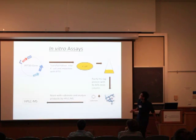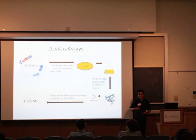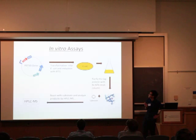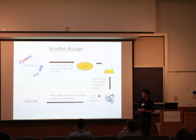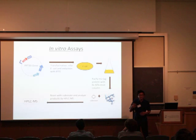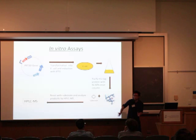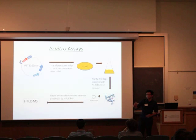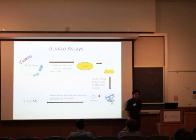For in vitro assays, we purify the proteins by cloning them into pET-30 vectors via LIC, transforming into BL21 expression cells, growing those up, and purifying the protein using nickel-NTA affinity chromatography. A histidine tag serves as an affinity tag to separate the protein we want away from all the other cellular proteins. Then we react the purified enzyme with substrates and analyze the products by HPLC-MS.